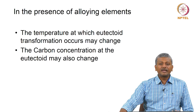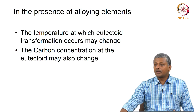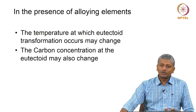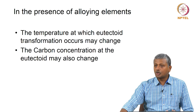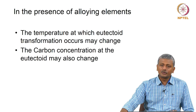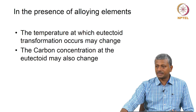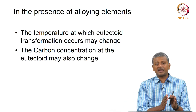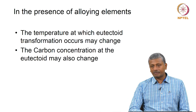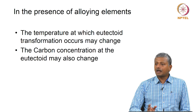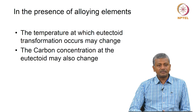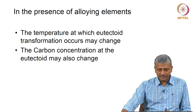Of course, when you have alloying elements — what common alloying elements are used in steel? Nickel, chromium, sometimes copper — these are used to increase the corrosion resistance of the steel. What happens is these may actually shift the temperature at which eutectoid transformation occurs, and the carbon concentration may also shift a little bit when you have some alloying elements built into this system.